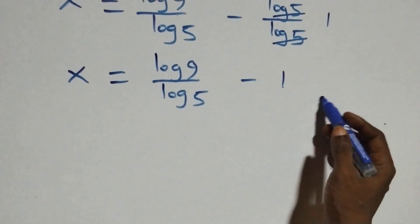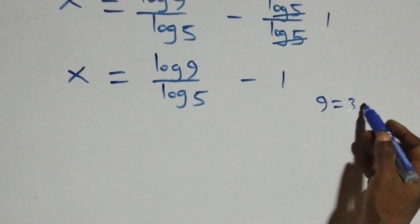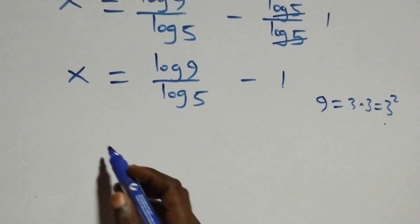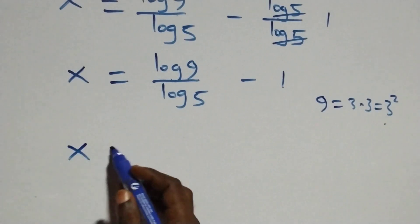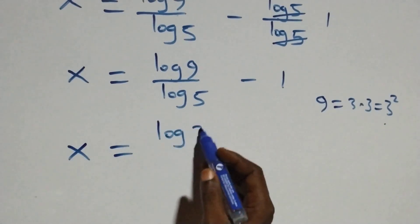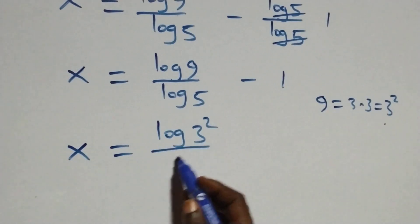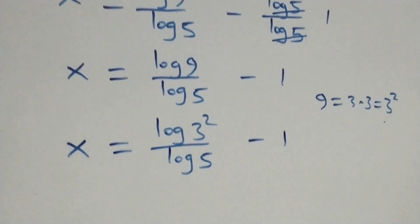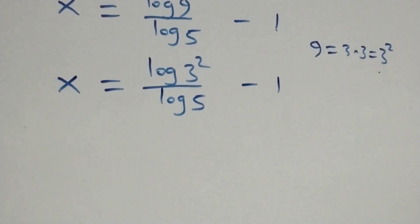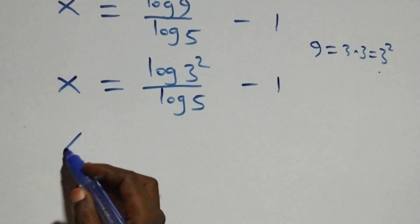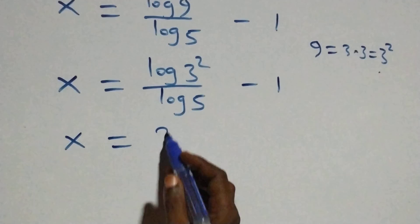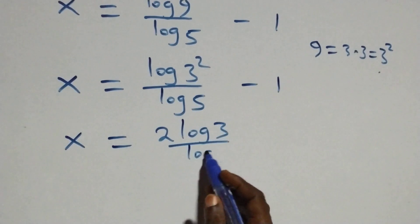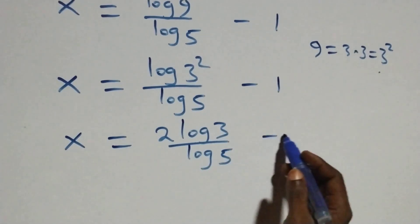We can write 9 as 3 times 3, which is the same as 3 squared. So x equals log(3 squared) over log 5 minus 1. Applying the power rule, the 2 comes down, giving x equals 2 log 3 over log 5 minus 1.